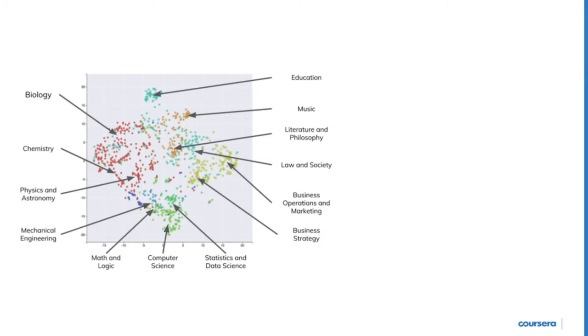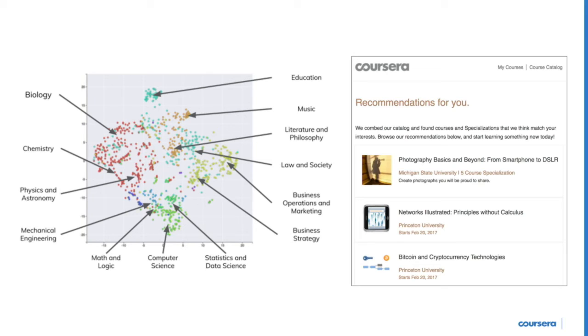We can't just classify users into 2,000 categories corresponding to our 2,000 courses. So we train a two-layer classifier: at the highest level, we first cluster our courses into 100 clusters using a t-SNE embedding on the course co-enrollment matrix. Once we figure out which cluster the user is more likely to belong to, we have a second-order classifier that recommends a specific course given the recommended cluster. It's a two-level hierarchy using decision trees at each level, and it gives a much better set of recommendations with a much higher click-through rate than what we had before.